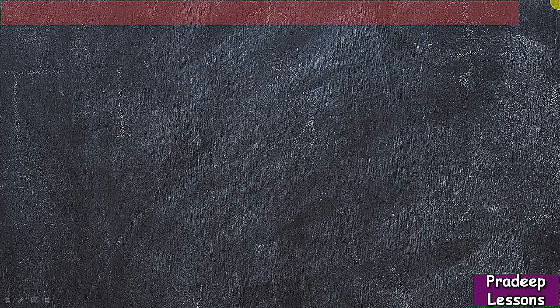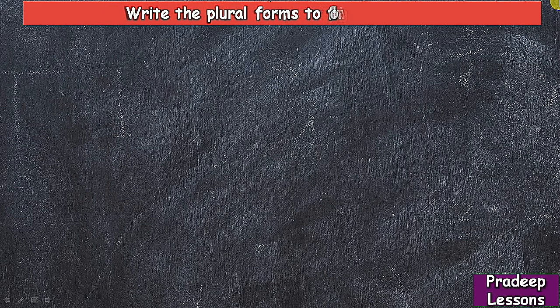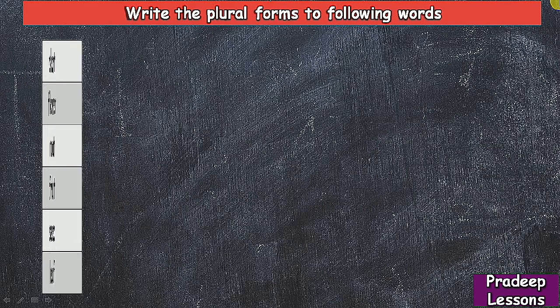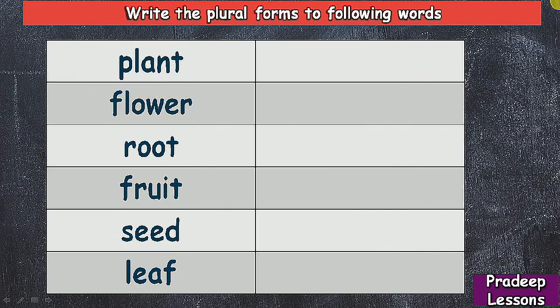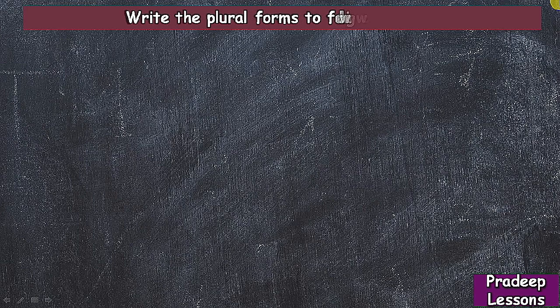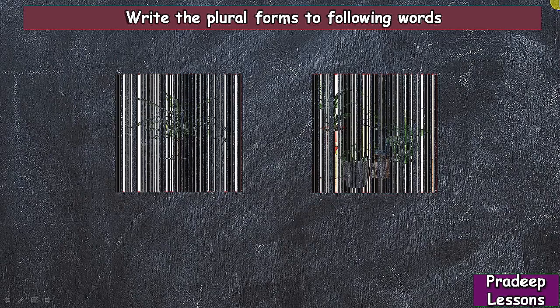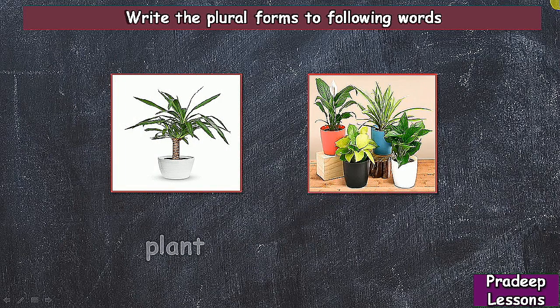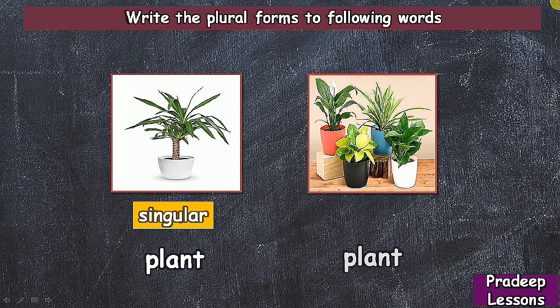Next activity: write the plural forms of the following words. Let us first learn with the help of pictures and then complete this task. In the first picture it is singular because there is only one plant. When there is more than one, it is called plural — plants.